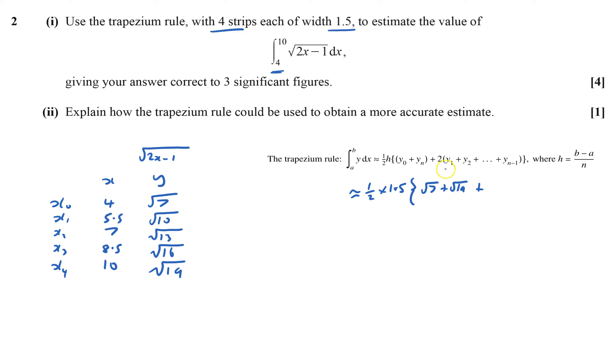And then I need two lots of everything else. So that's root 10 plus root 13 plus root 16.